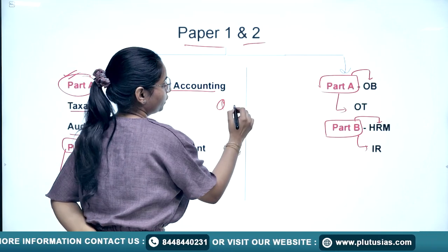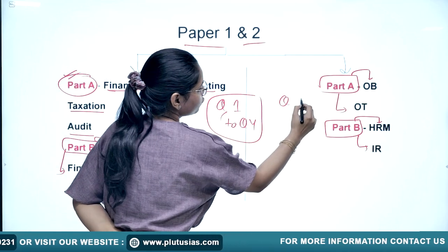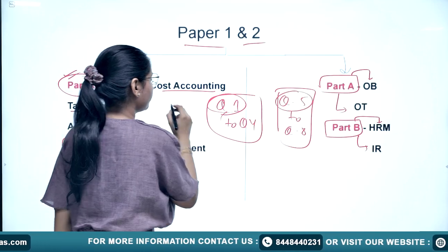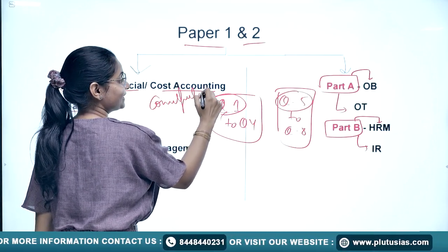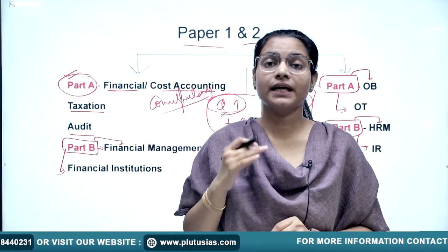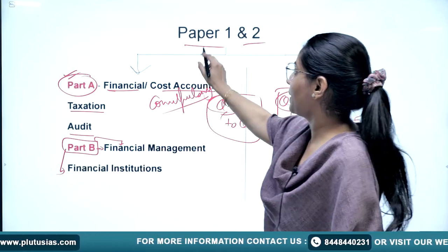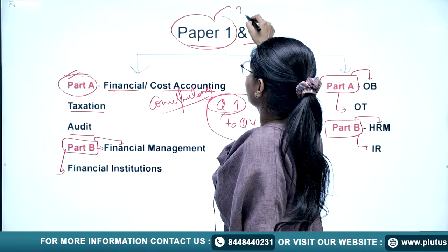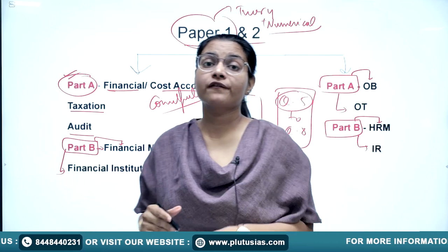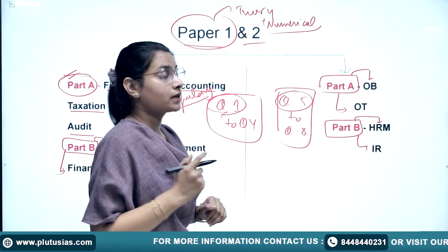Questions 1, 2, and 4 will be from Part A, and questions 5, 6, and 8 will be from Part B. The first and fifth questions are compulsory and can be asked from any topic. So you can't leave any topic because they can appear in the compulsory questions 1 and 5. Paper 1 includes both theory and numericals. At least prepare the theory of every topic so that you can attempt questions 1 and 5, since these are compulsory.